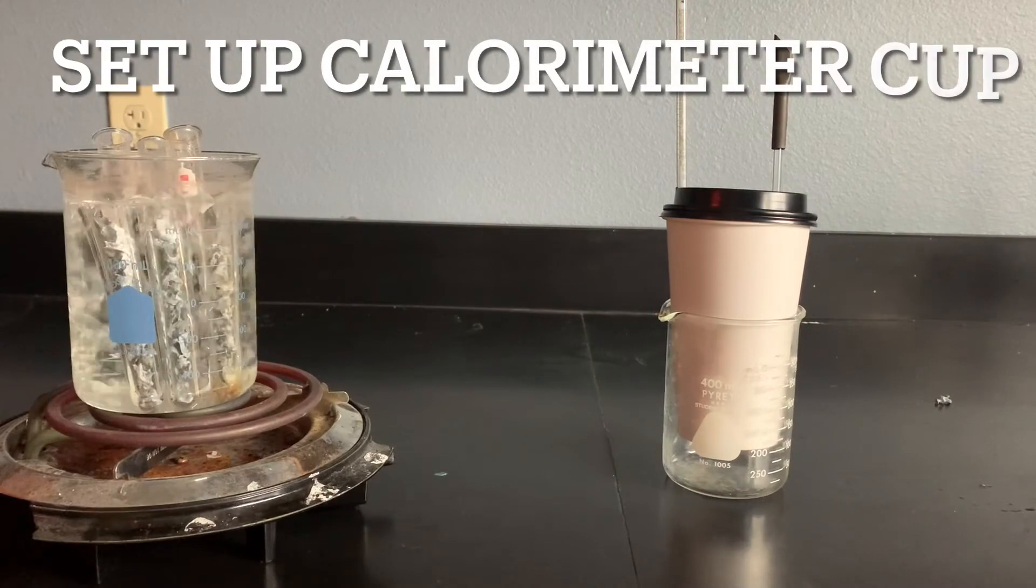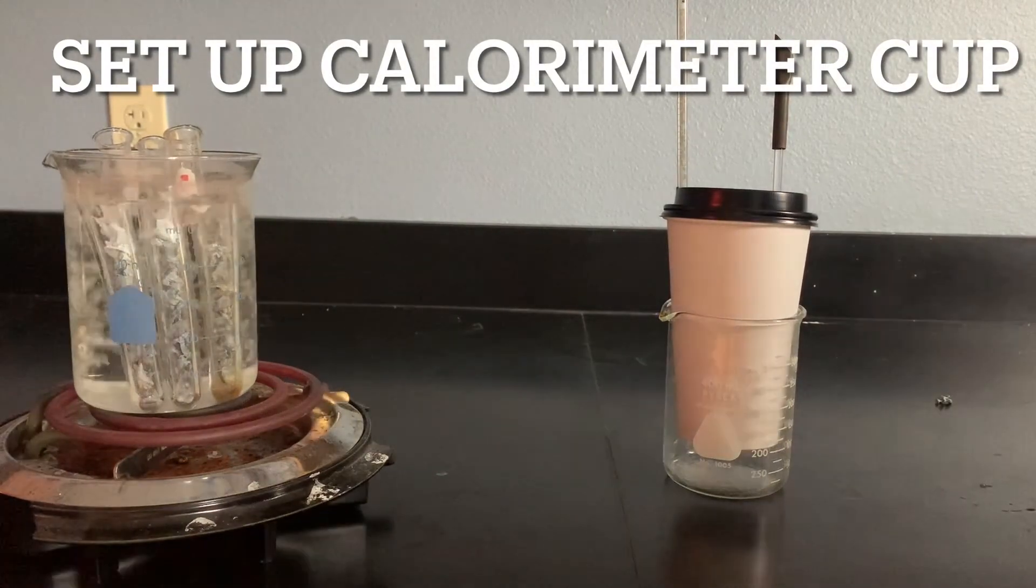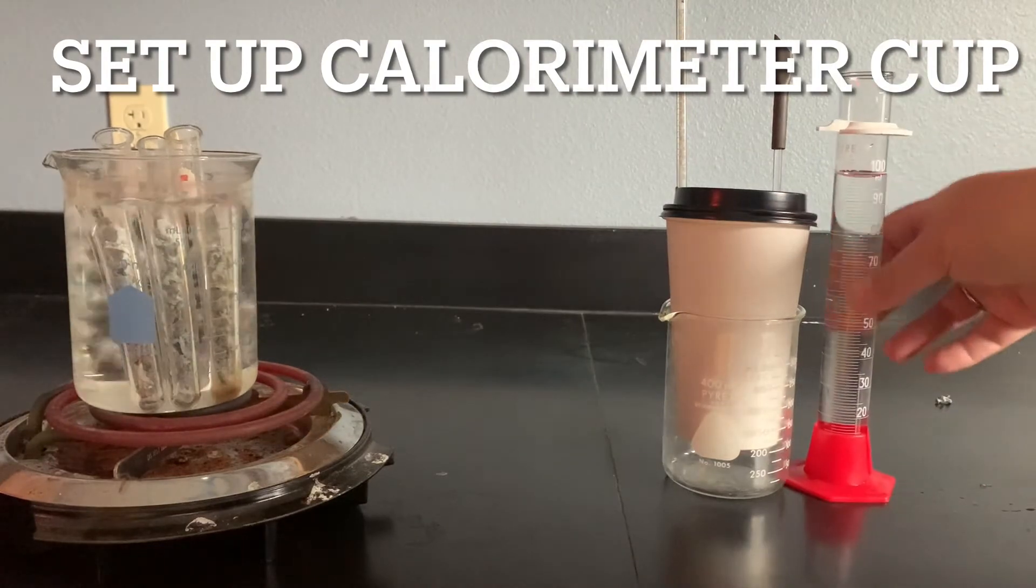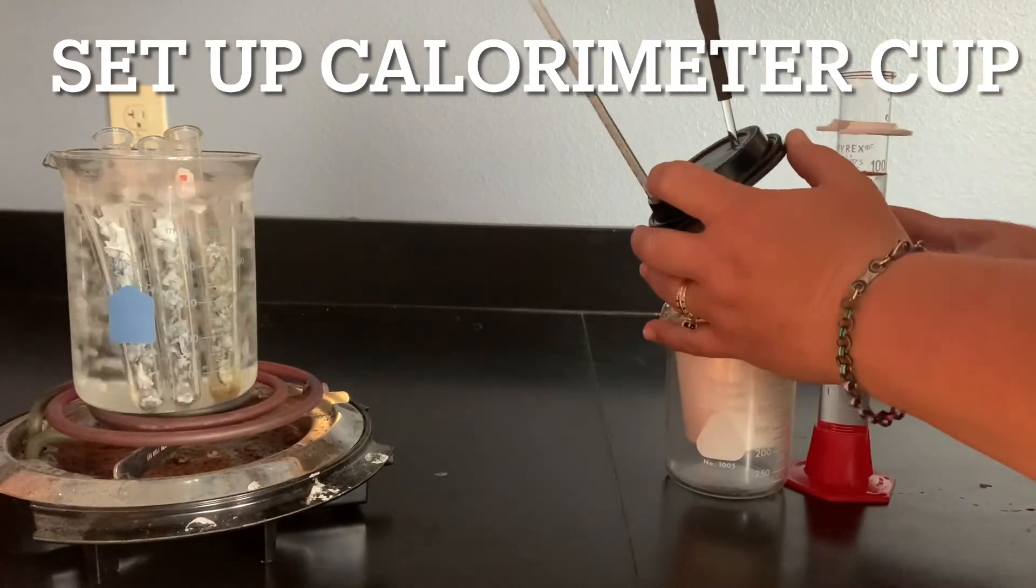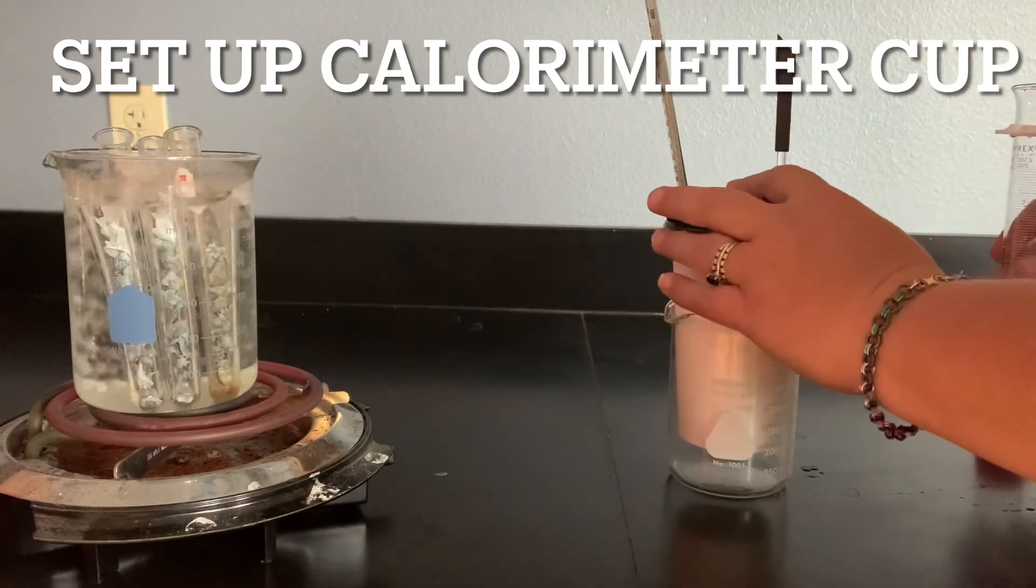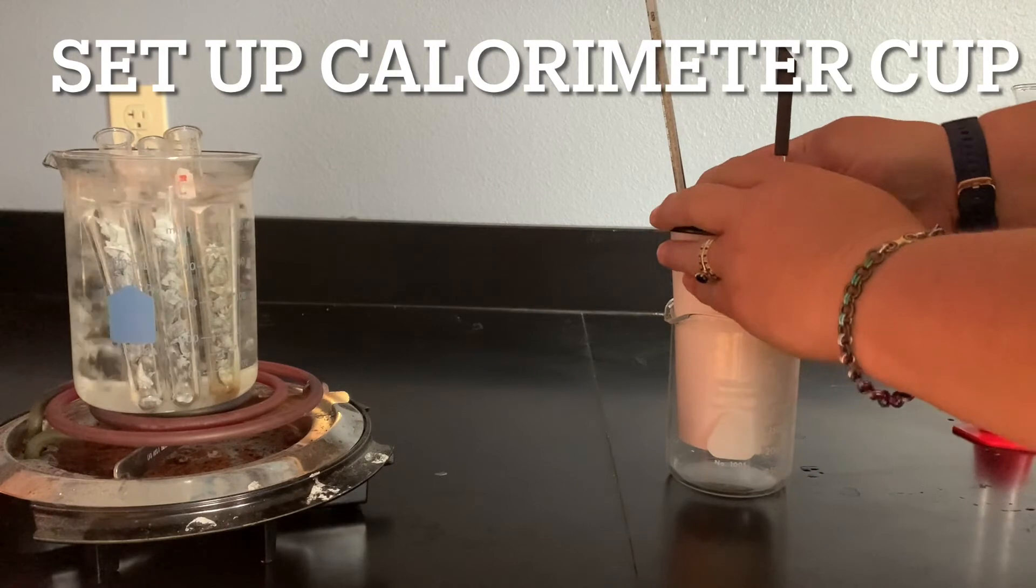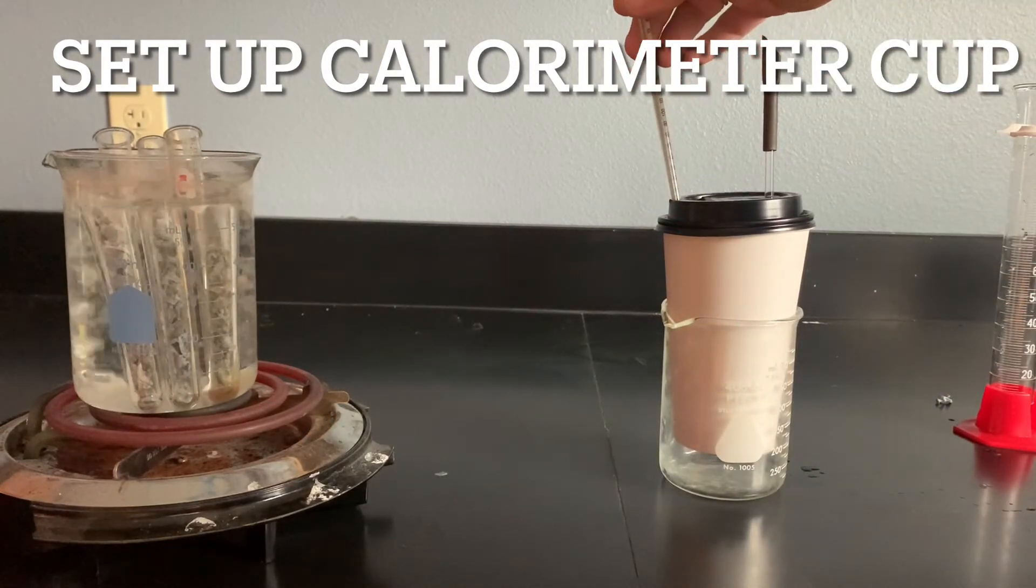Here I have my calorimeter cup I've got set up, and then I'm simply going to take 100 milliliters of tap water and I'm going to pour it into my calorimeter cup, put the lid on there, and I need to get a starting temperature for the water.